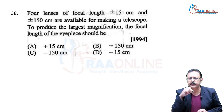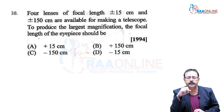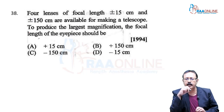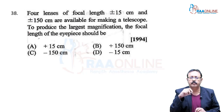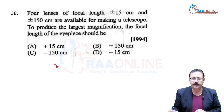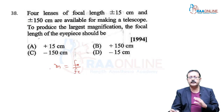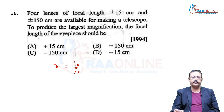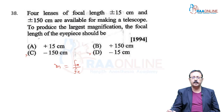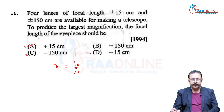Problem 38, from 1994 AIPMT. Four lenses are available and we want to make a telescope with the largest magnification. Magnification = F_objective / F_eyepiece. Since we are using convex lenses, focal lengths must be positive (options C or D are excluded). We need the largest F_objective and smallest F_eyepiece, so we go with option A, 38A.